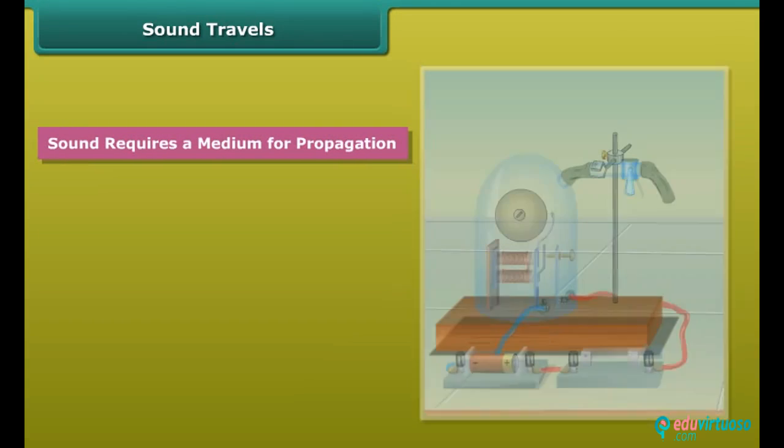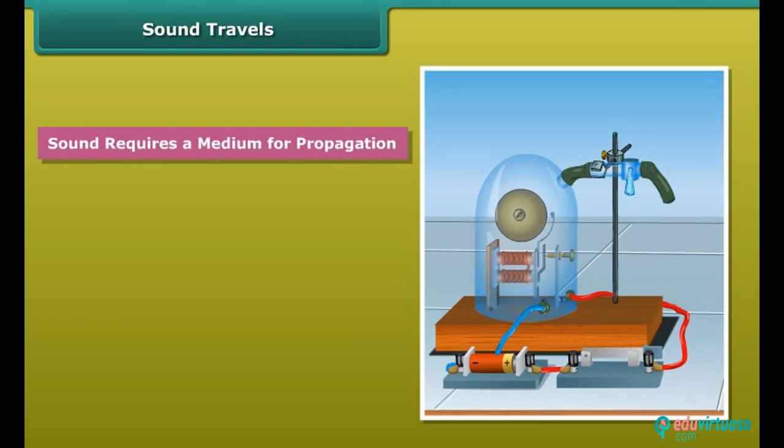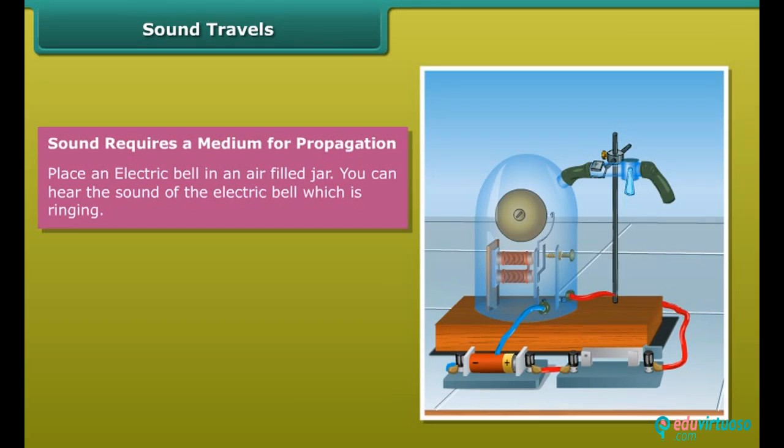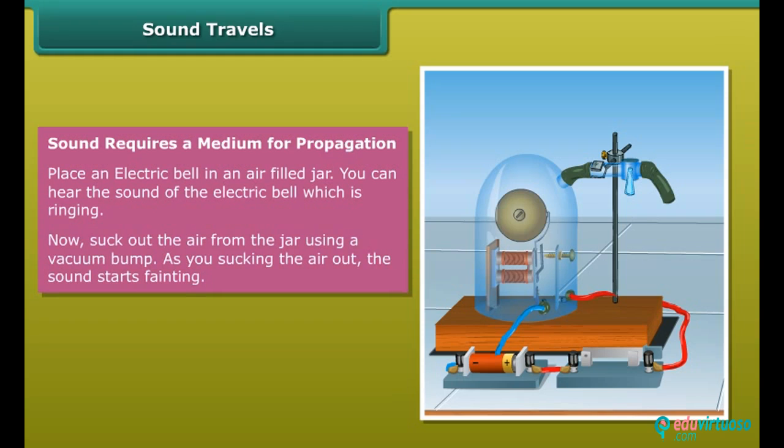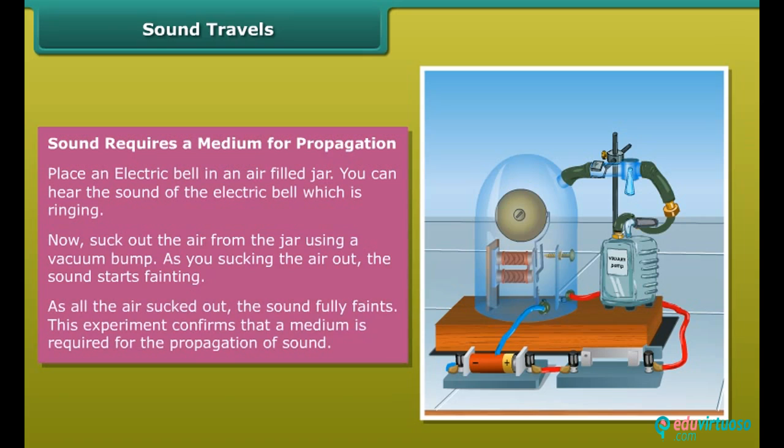Sound requires a medium for propagation. Place an electric bell in an air-filled jar. You can hear the sound of the electric bell which is ringing. Now suck out the air from the jar using the vacuum pump. As you suck the air out, the sound starts fainting. As all the air is sucked out, the sound fully fades. This experiment confirms that a medium is required for the propagation of sound.